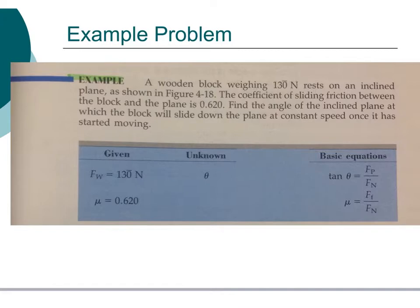Here we have a second example: a wood block weighing 130 N rests on an incline plane. The coefficient of sliding friction between the block and the plane is 0.620. We're asked to find the angle of the incline at which the block will slide down at a constant speed once started. We know the weight is 130 N and the coefficient of friction is 0.620. We do not know the angle.